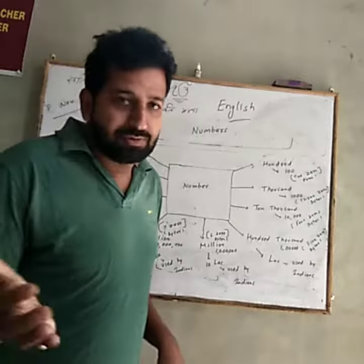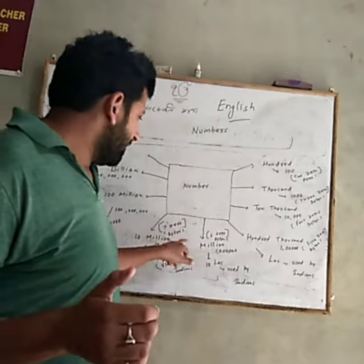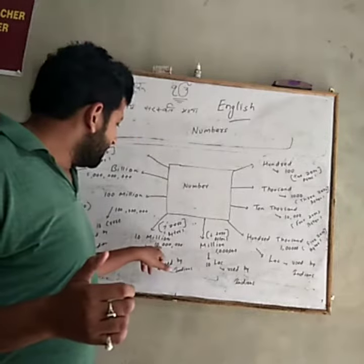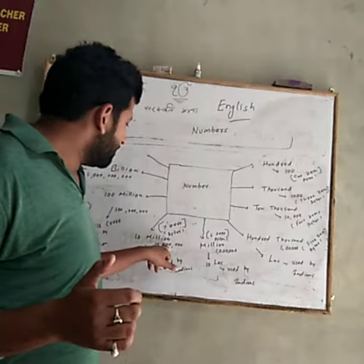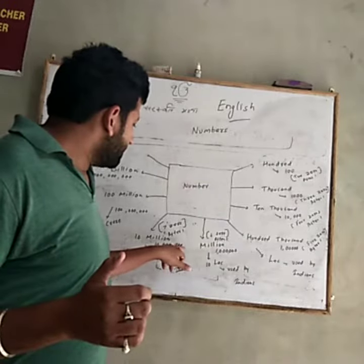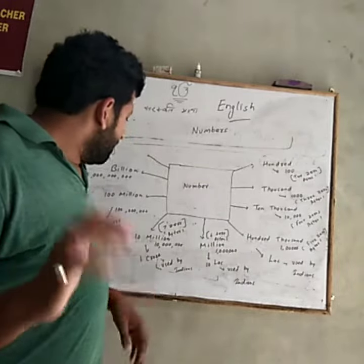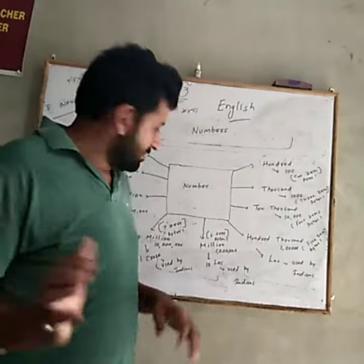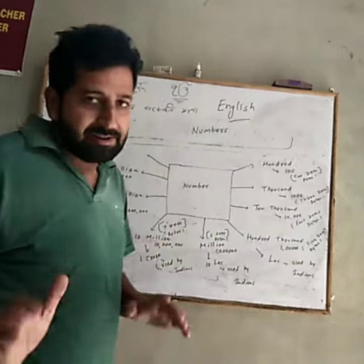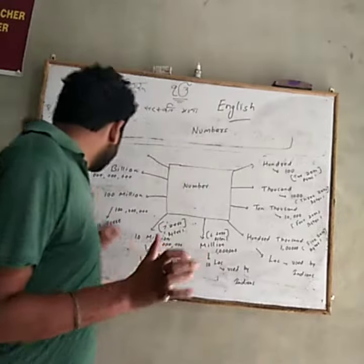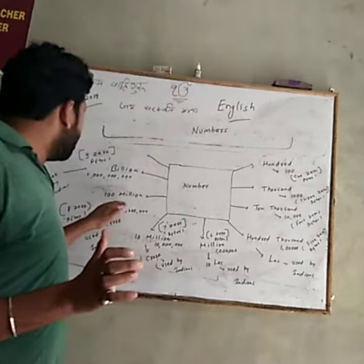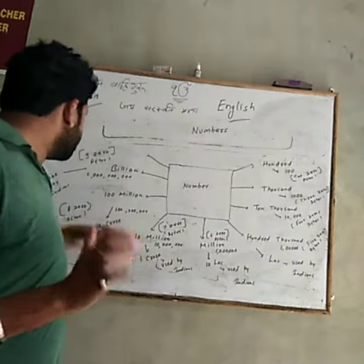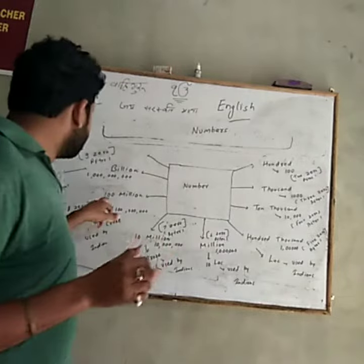Ten million has seven zeros after one: one, two, three, four, five, six, seven. Indians use 'one crore' for ten million. Next is hundred million — there are eight zeros after one.